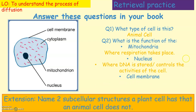The nucleus controls the activities of the cell. Some may also write that chromosomes are contained in the nucleus — these are all correct answers. What is the function of the cell membrane? The cell membrane controls what enters and leaves the cell, i.e., what goes in and out of the cell.